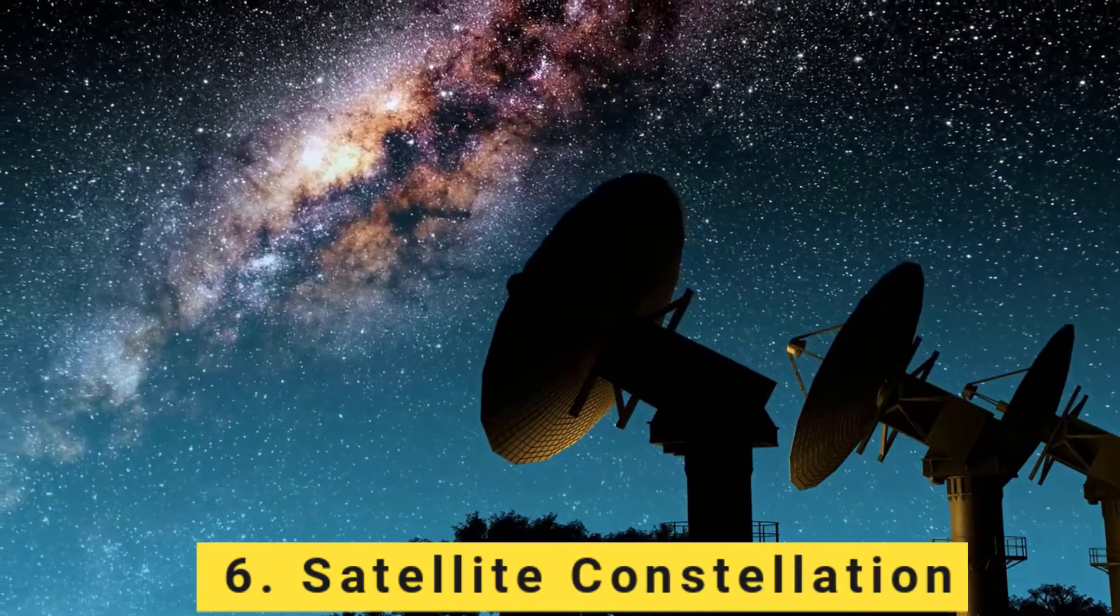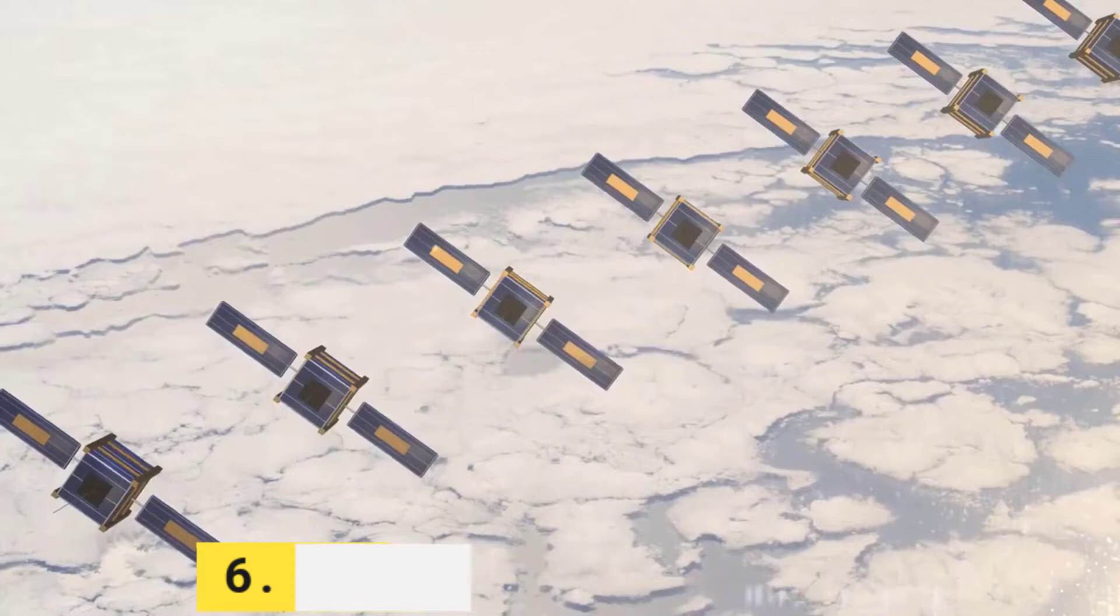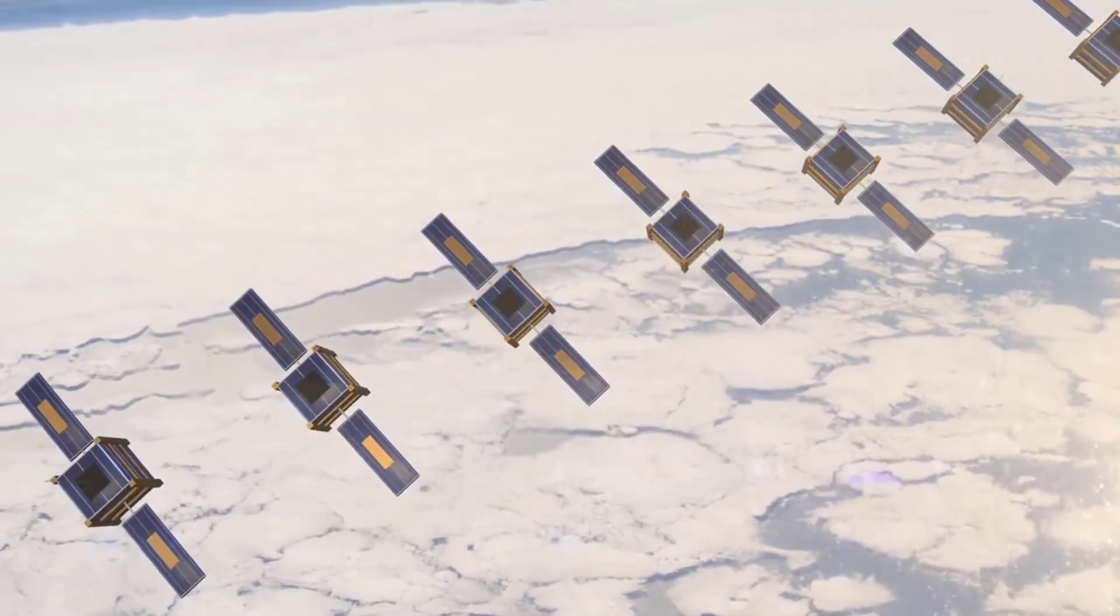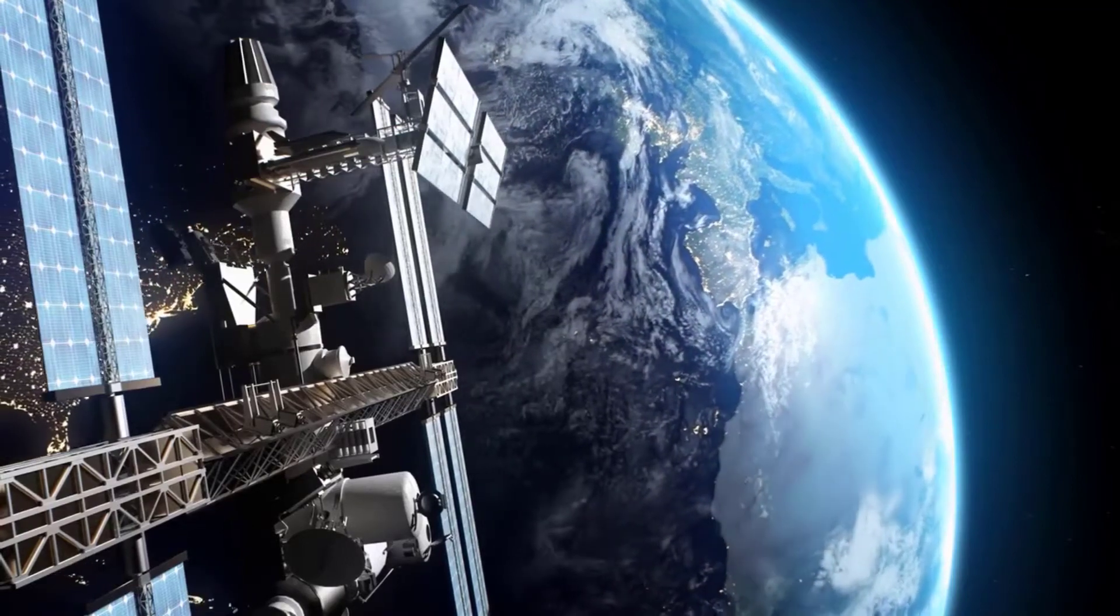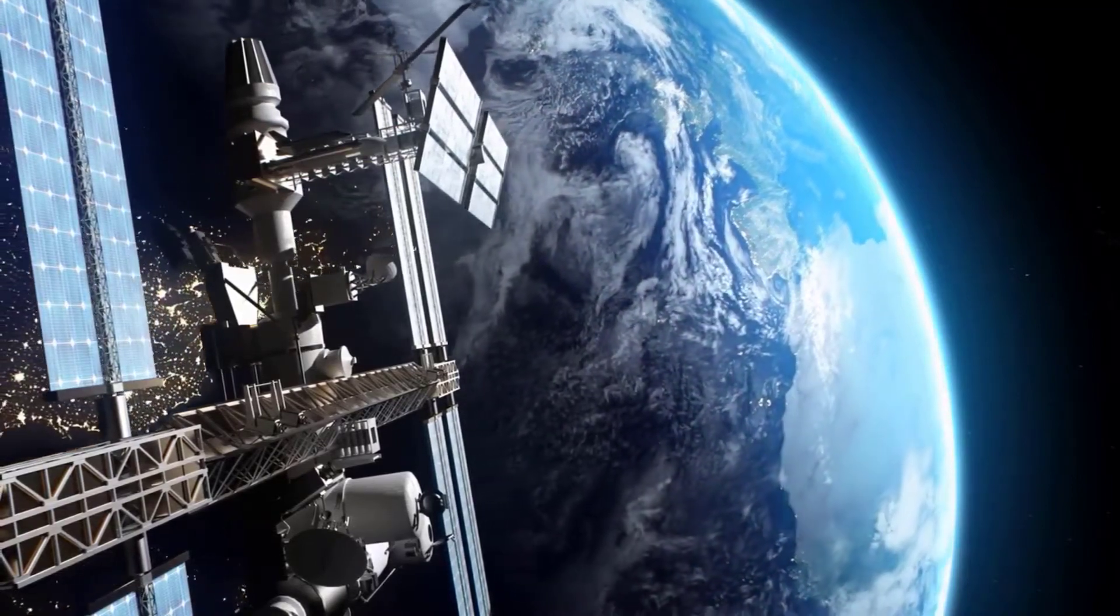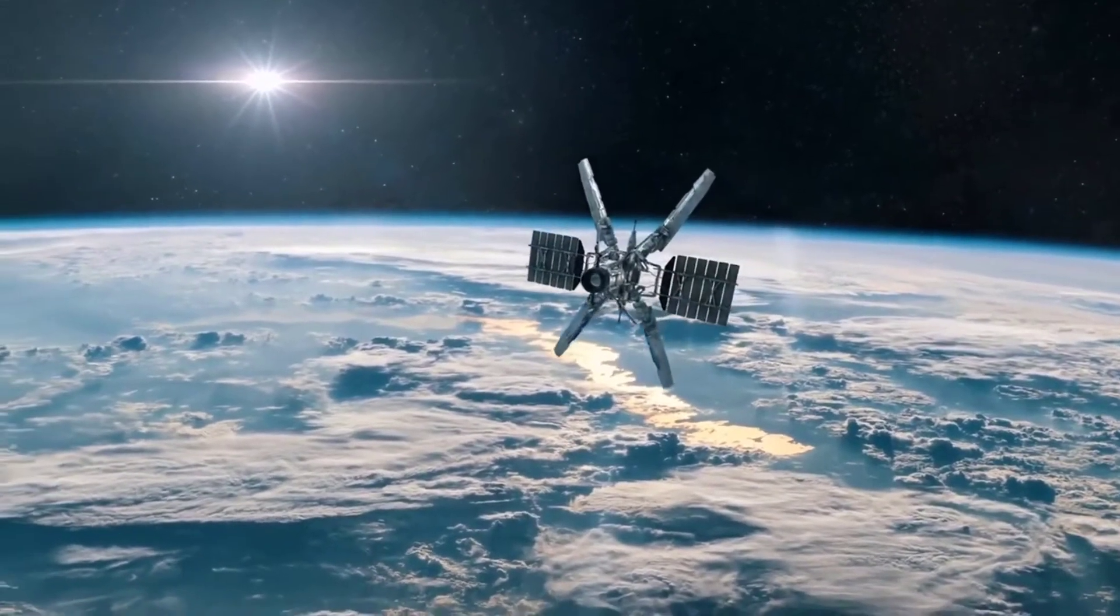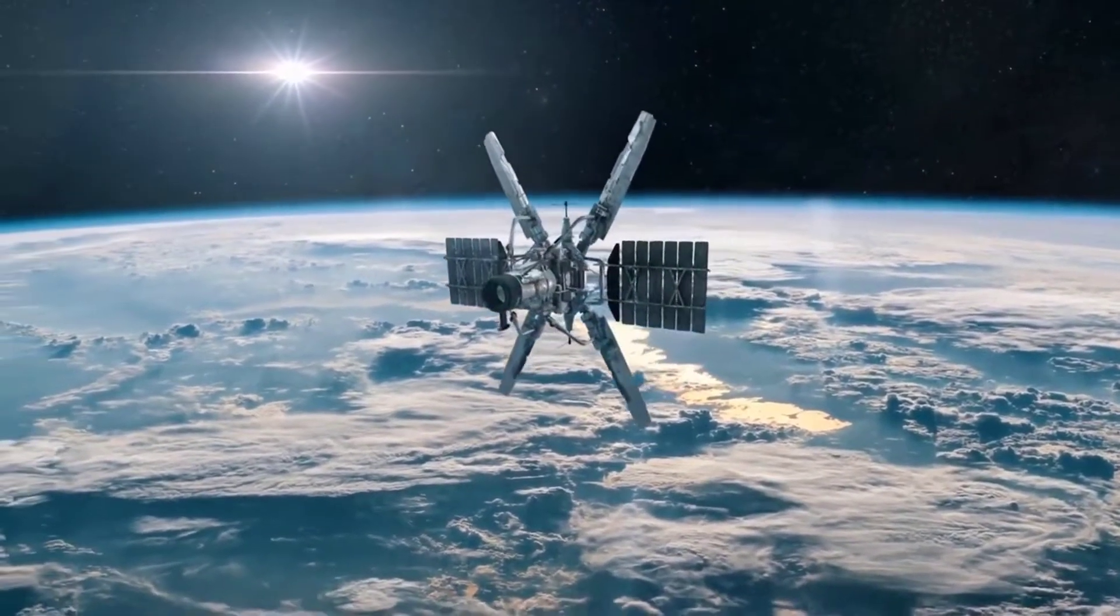Number 6: Satellite Constellation. A satellite constellation is a group of satellites working together to provide a specific service or coverage area. These satellites are usually in orbit around the Earth and are often launched into space as a group. There are many types of satellite constellations, each designed for a specific purpose.